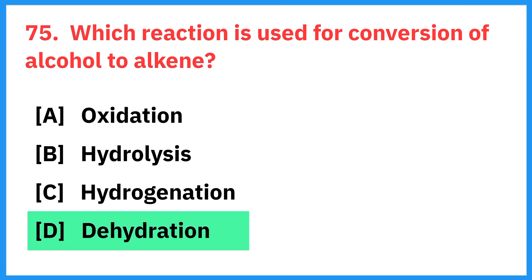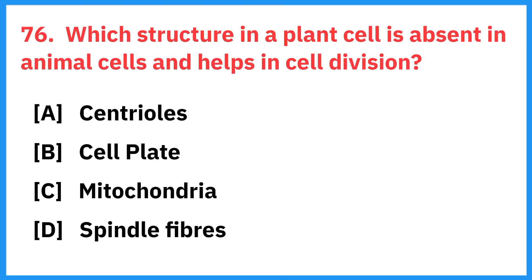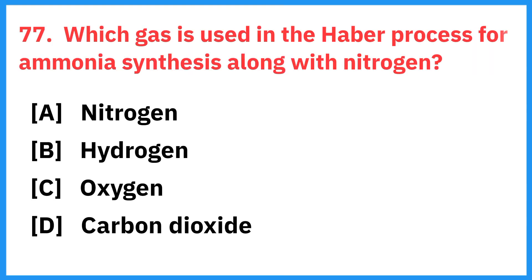Which reaction is used for the conversion of alcohol to alkene? Right answer is dehydration. Which structure in a plant cell is absent in animal cells and helps in cell division? Right answer is cell plate. Which gas is used in the Haber process for ammonia synthesis along with nitrogen?